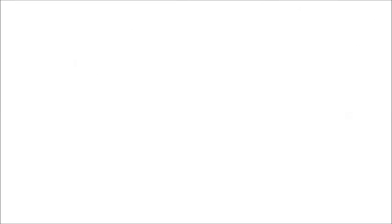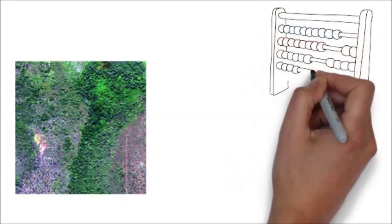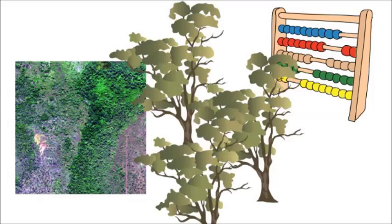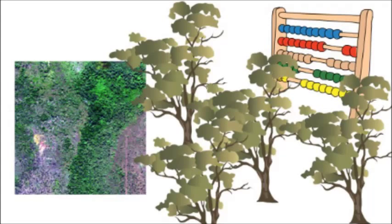So here's the problem. I have some high spatial resolution imagery, or even some field data that allows me to count individual trees and determine the vegetation density at my field site, but my data only cover a very small area.